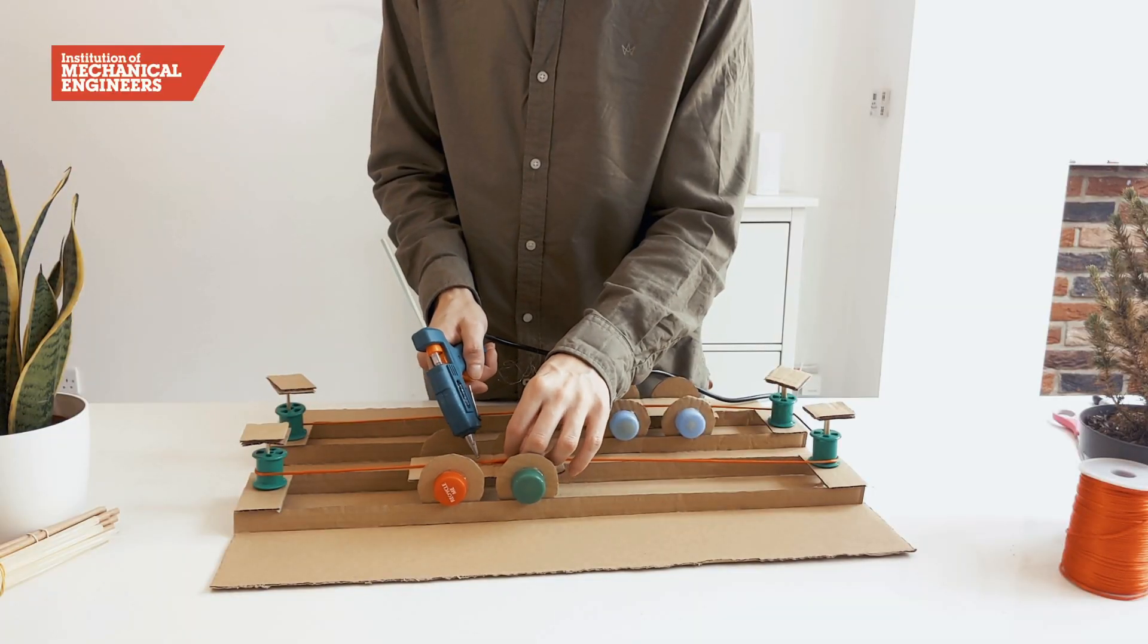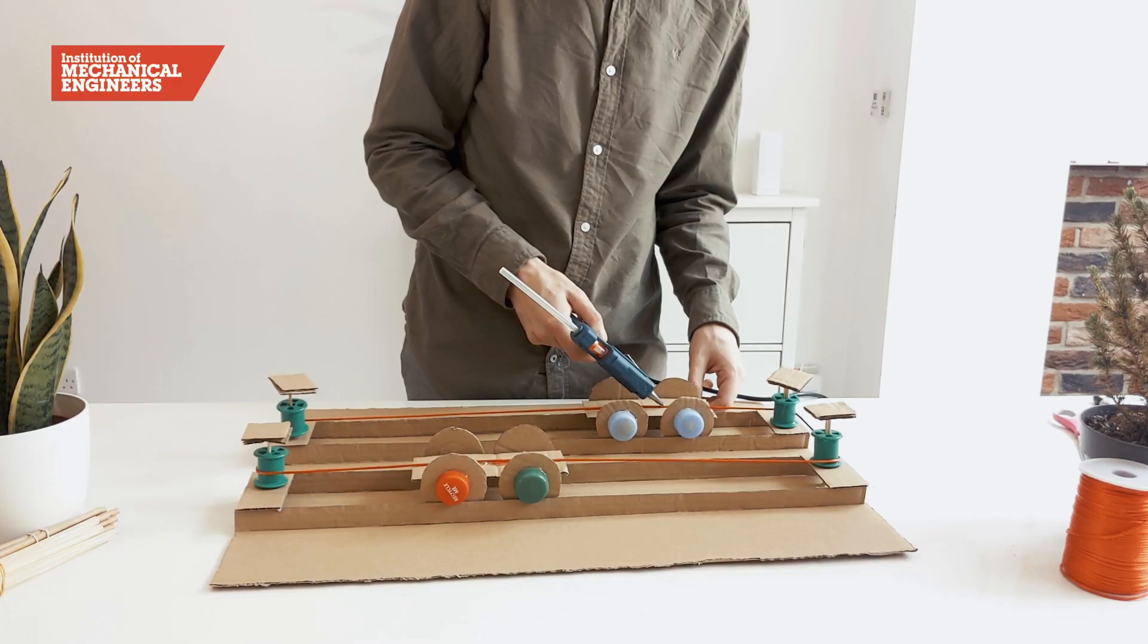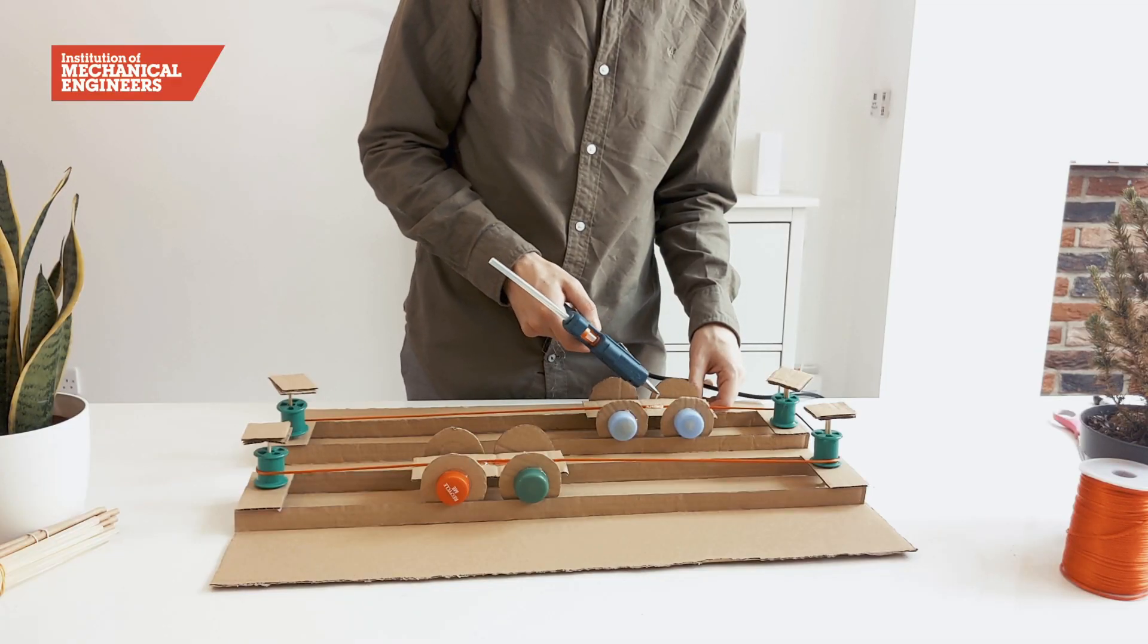So that the trains counterbalance one another push them to the opposite ends of the track. Then glue the nylon string onto the base of the other train.